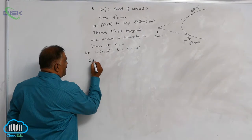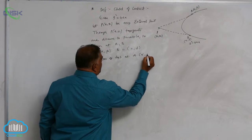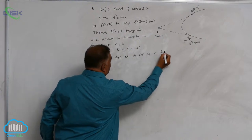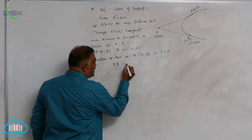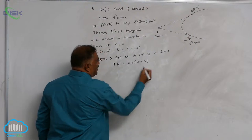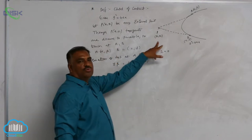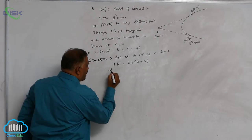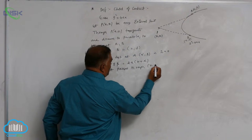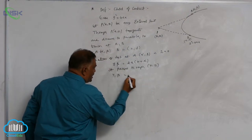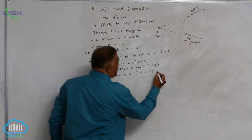First, we write the equation of tangent at A(α, β), which is S1 equal to 0. The S1 equation is: y·β = 2a·(x + α). This tangent passes through P(x1, y1), so substituting: y1·β = 2a·(x1 + α). Call this Equation 1.